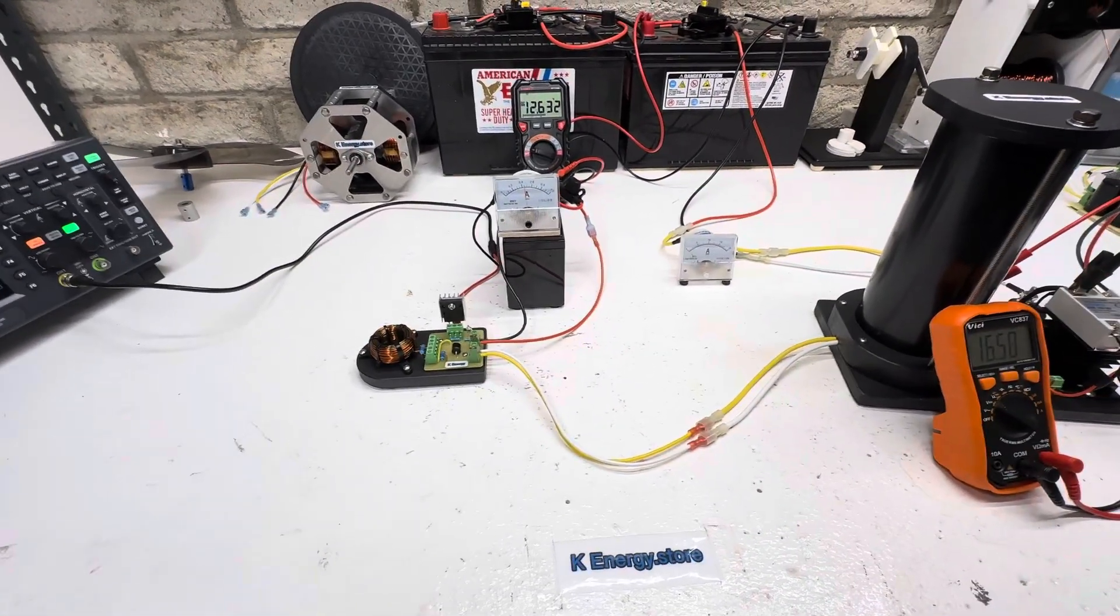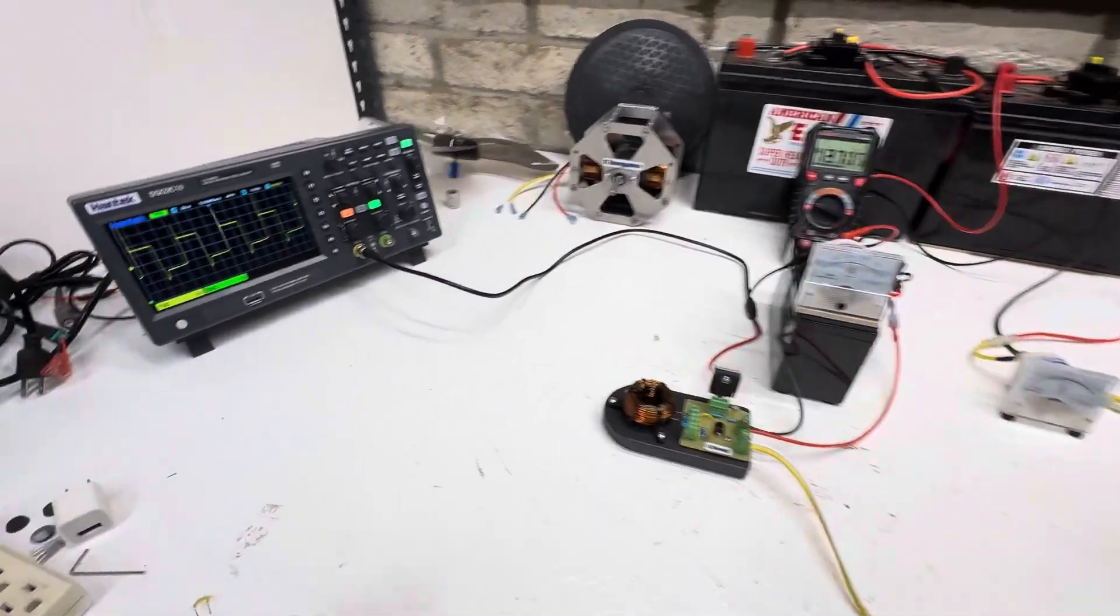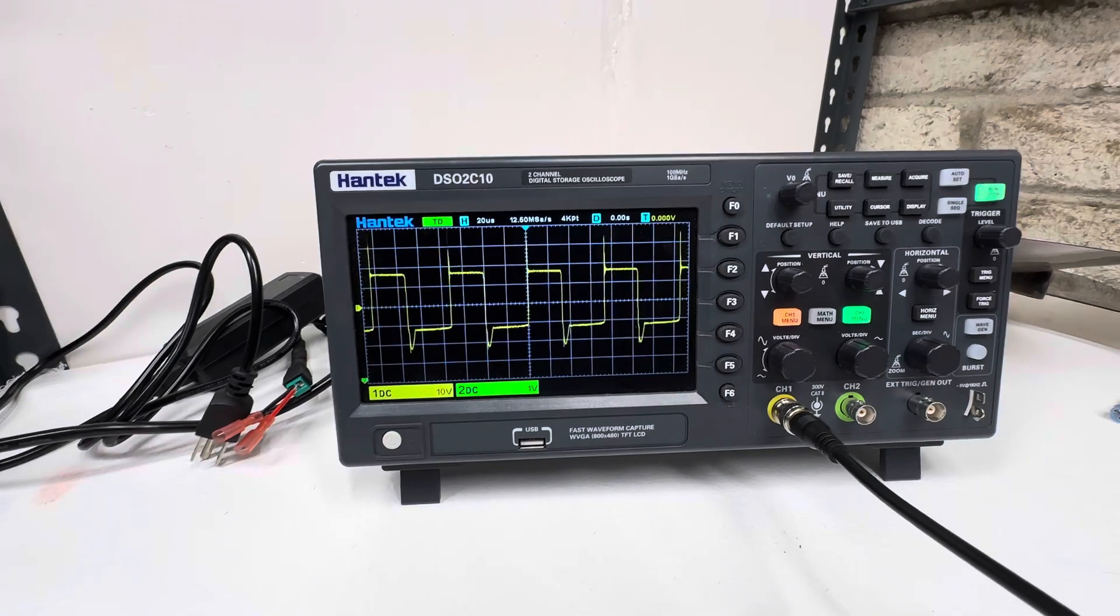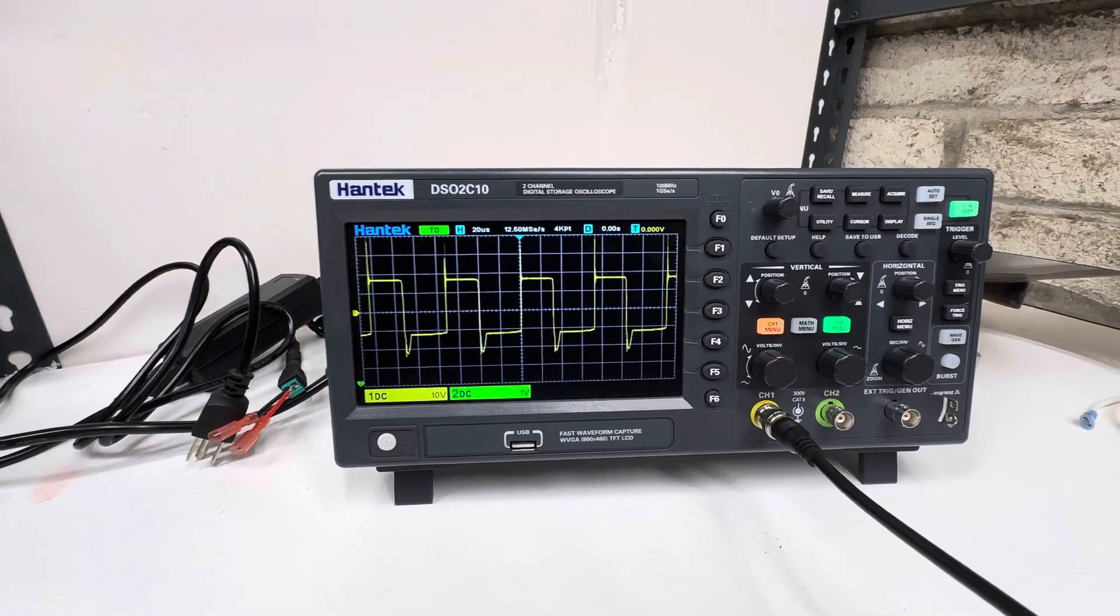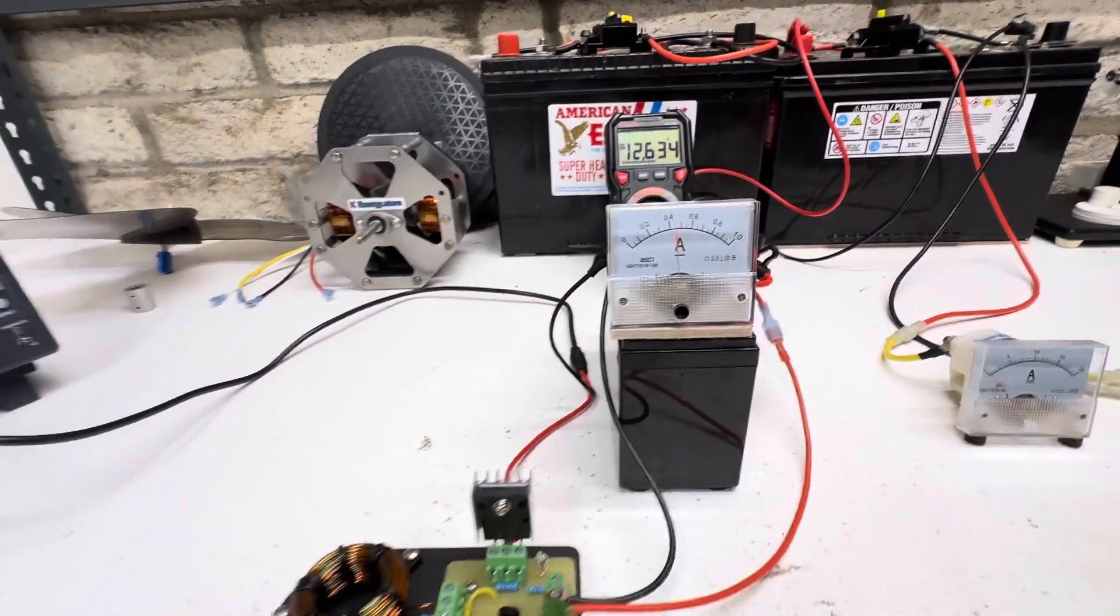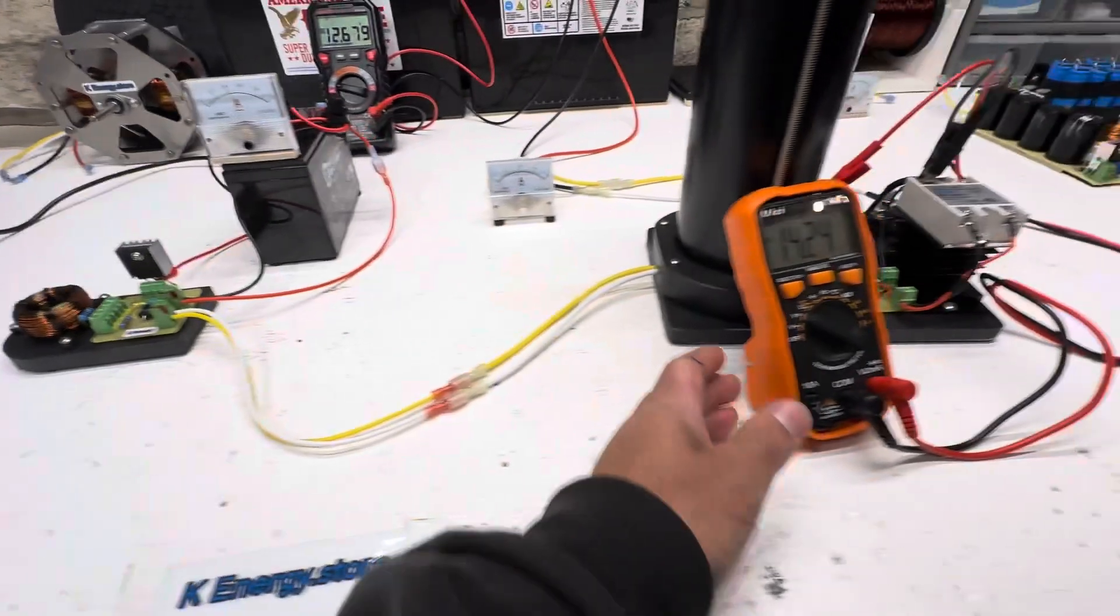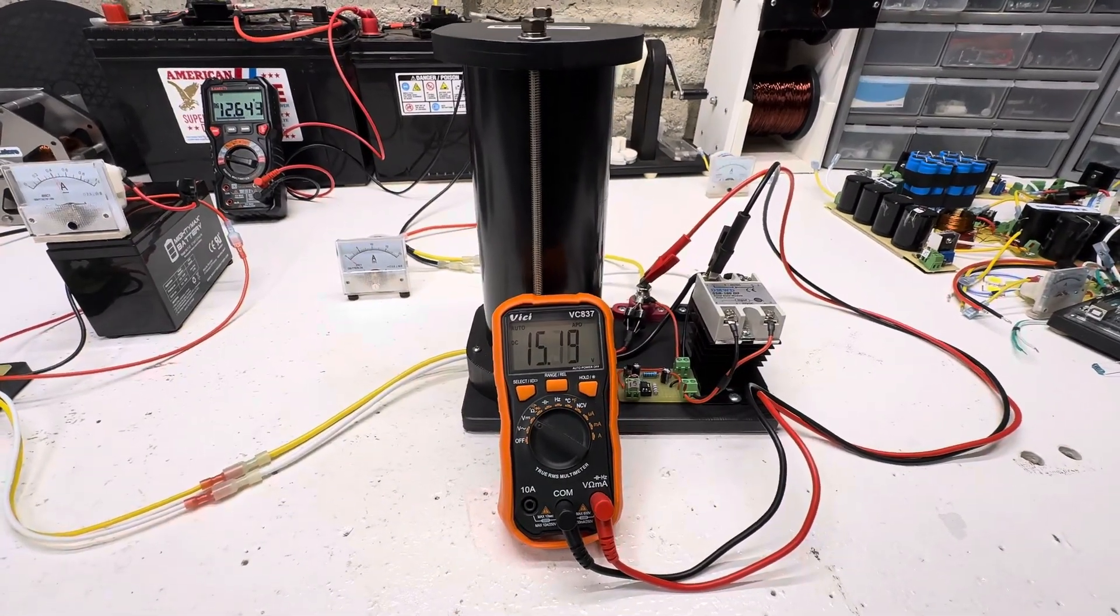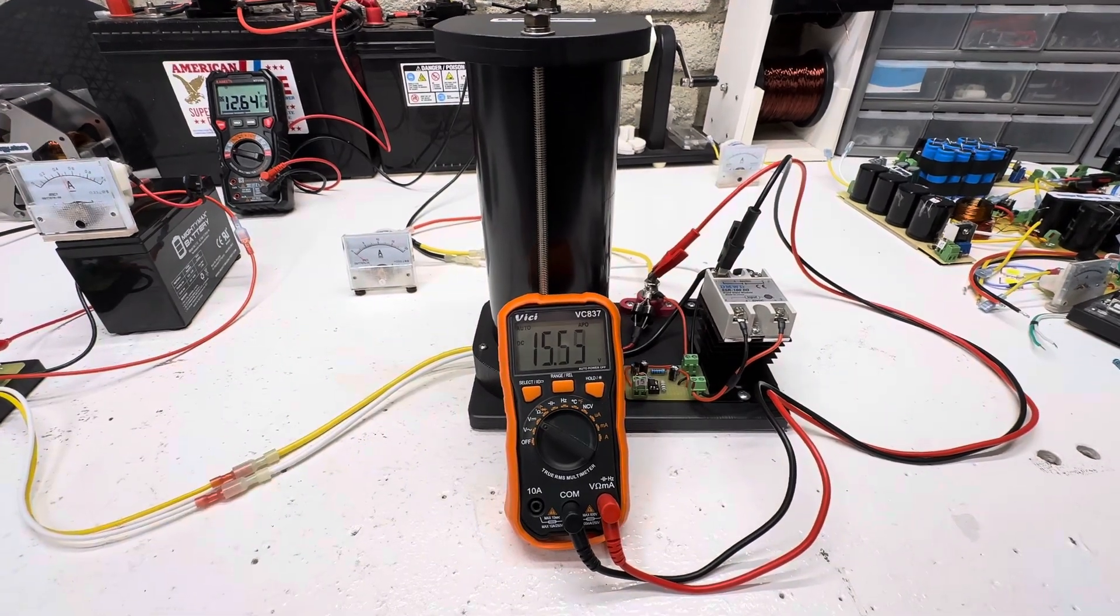So you kind of get an idea of how much this charges. And this is the scope shot of it. We're running at 12 kilohertz right now. We're using 450 milliamps out of a 12 volt battery. It's already going right now. We're charging this thing up. It's going to go up to about 16, 16.6 volts.